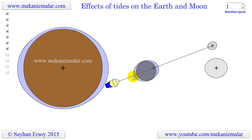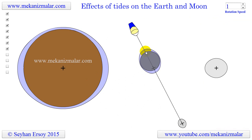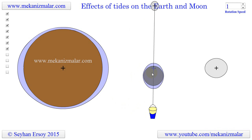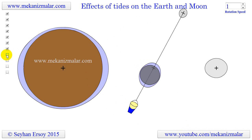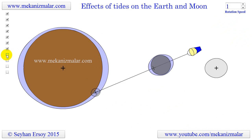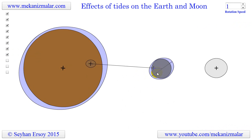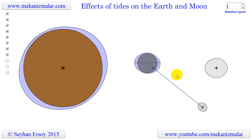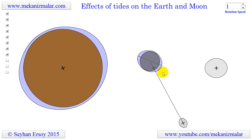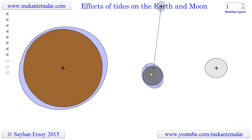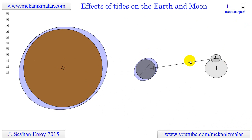Now we know why there is a second bulge opposite the first bulge. This was a mystery for a long time before the internet age. Now the real complexity begins with far-reaching consequences. The two bulges we discussed were shown right on the line joining the Earth and the Moon. However, this is not the case. Due to the rotation of the Earth, the bulge moves a little bit ahead of the line joining the Earth and the Moon, since the ocean water is carried away from this line by the Earth's rotation. This misalignment of the bulges causes the Earth's rotation to slow down with time. It also causes the Moon to move further away from the Earth, which will be the subject of another video.